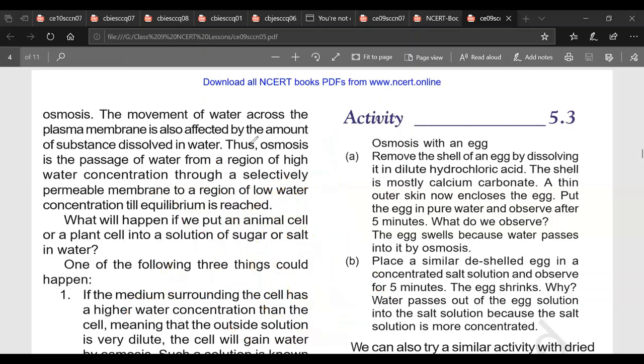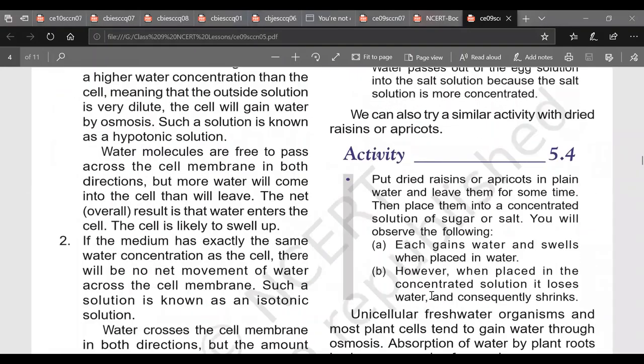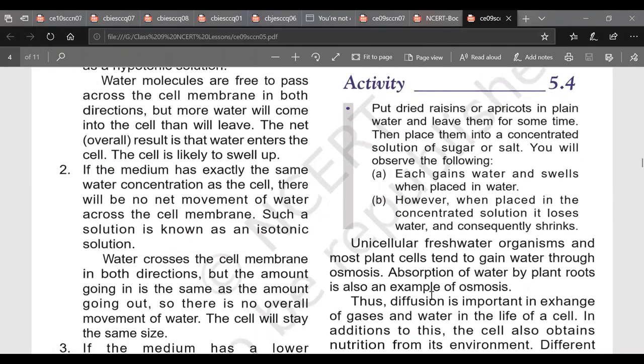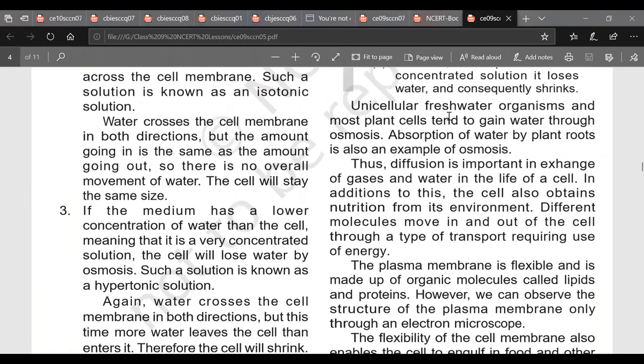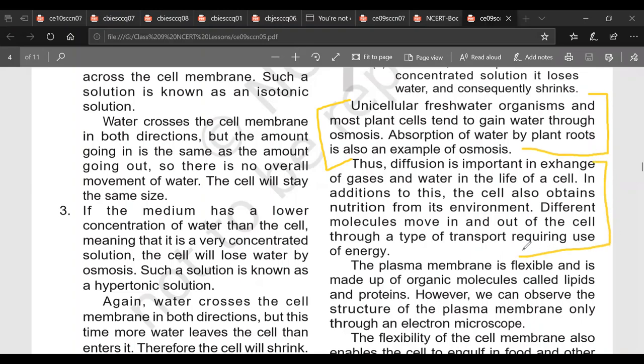And then next activity is again raisins that I've already explained to you, raisins or apricots. We can show osmosis with the help of raisins or apricots. Now unicellular freshwater organisms and most cells tend to gain water through osmosis. And absorption of water by plant roots is also example of osmosis. So this is significance of osmosis. Then comes diffusion is important in exchange of gases and water in life of cell. In addition cells also absorb nutrition from environment by diffusion.